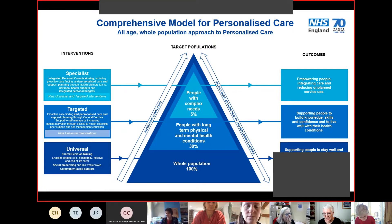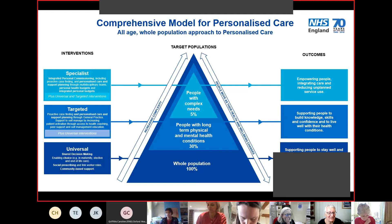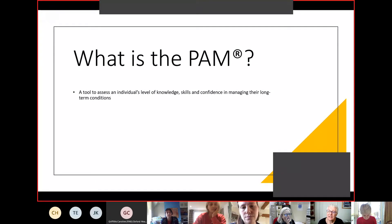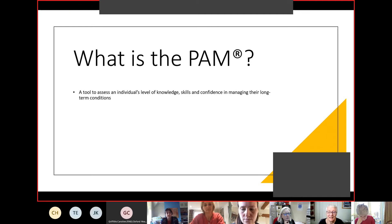The PAM is part of the personalized care model that NHS England and NHS Improvement have developed, recommended for use with people with long-term conditions - the 30% of the population in the middle of the pyramid. It's a tool to assess an individual's level of knowledge, skills, and confidence to manage their long-term conditions - that's what it was originally developed for. The theory is that people with the necessary knowledge, skills, and confidence will do better with monitoring their long-term conditions and may ultimately use less in the way of health services.